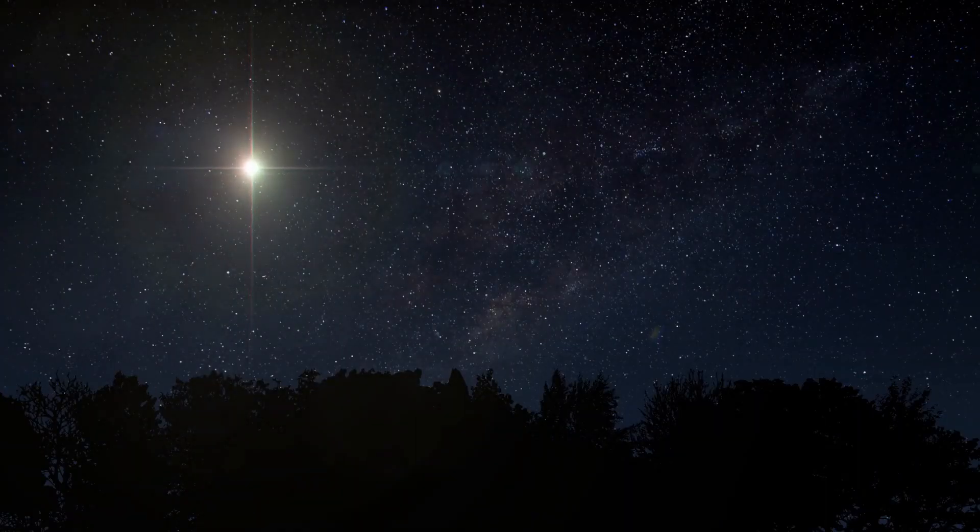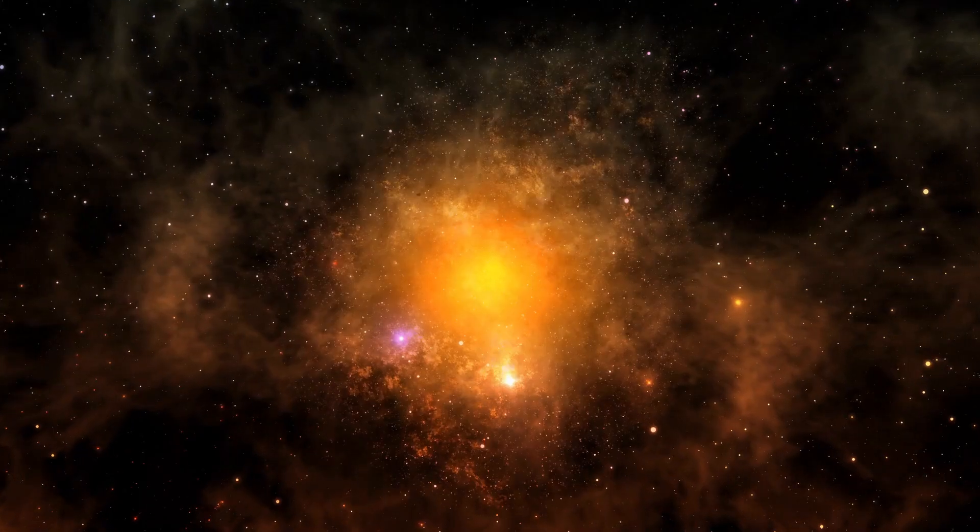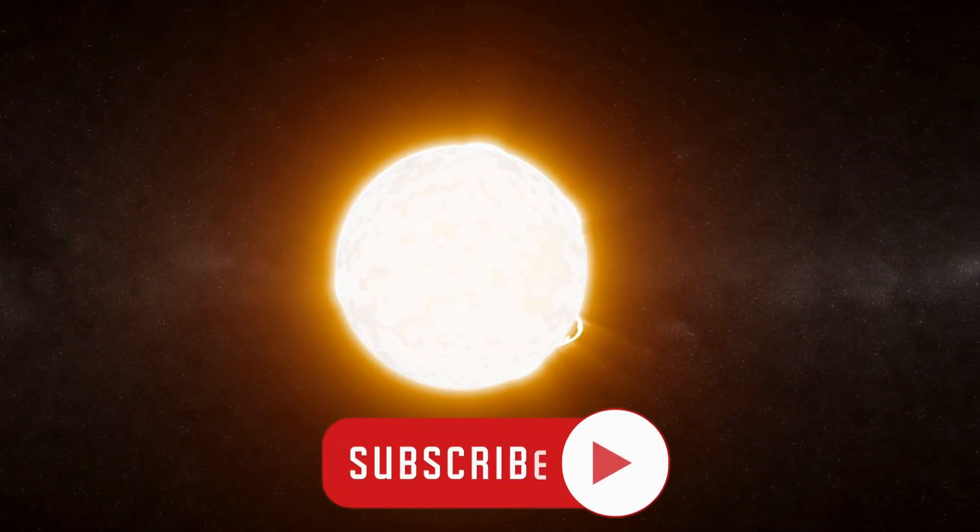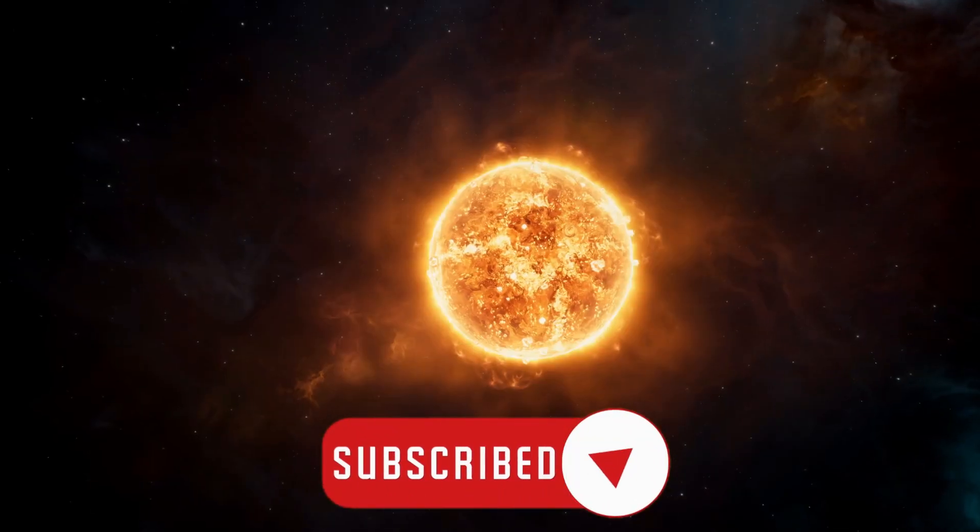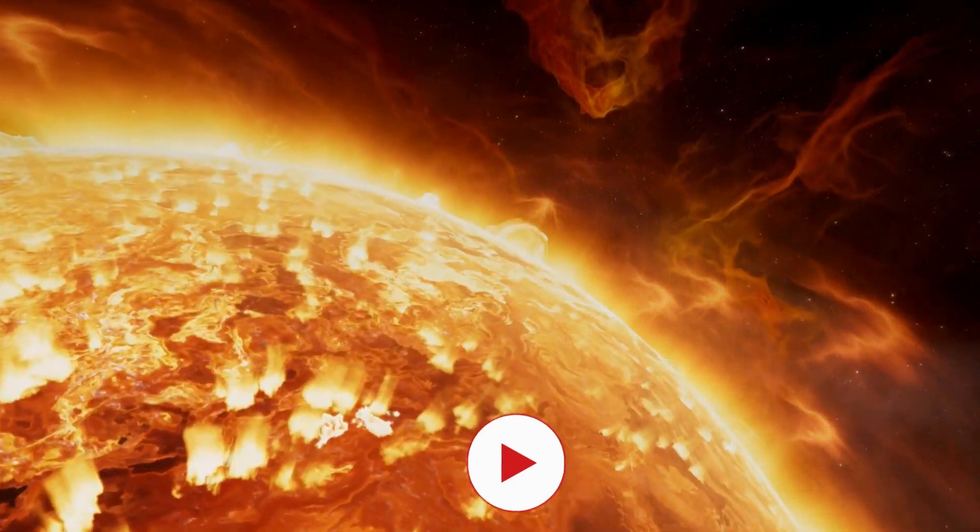When stars deplete their hydrogen fuel, they evolve into red giants. In approximately 5 to 6 billion years, our Sun will undergo the same transformation, expanding and shedding layers, potentially affecting the inner planets of the solar system.